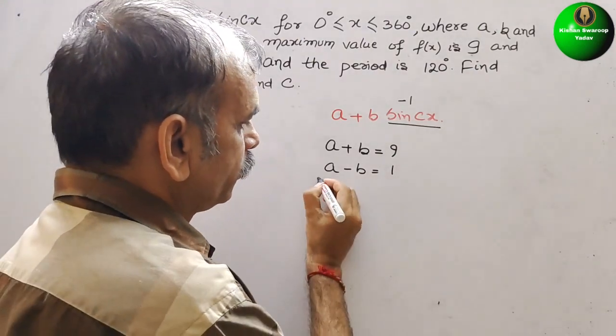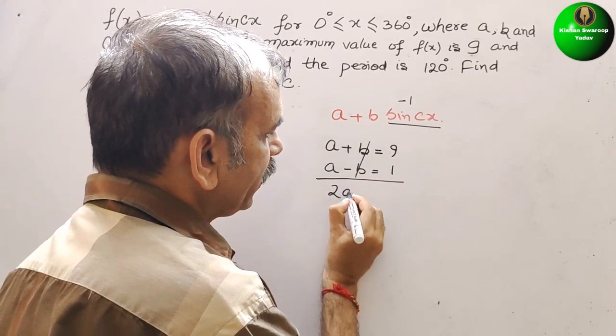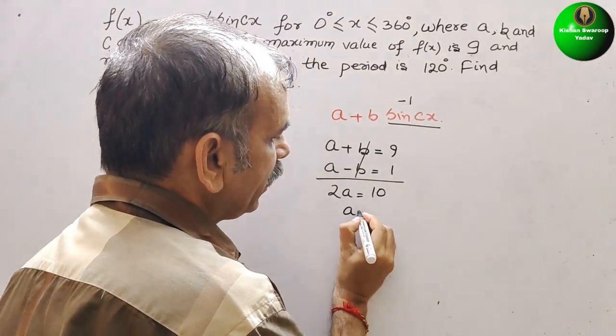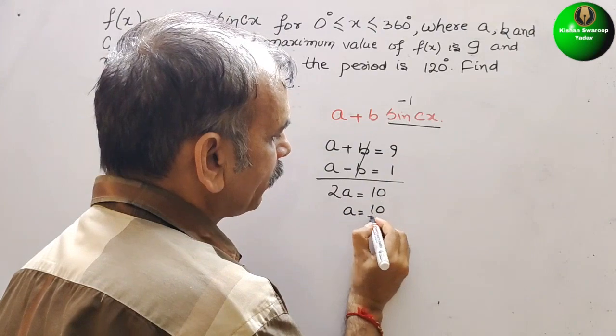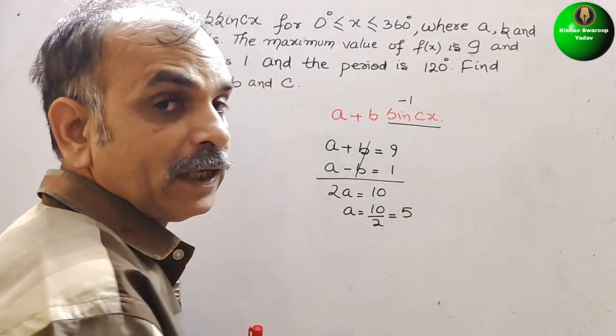Solve this. If you solve this, we will get 2a is equal to 10. So a is equal to 10 by 2. That is equal to 5. So now a is 5.